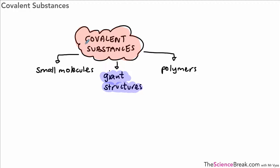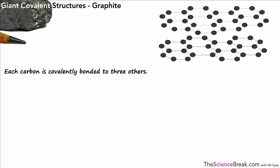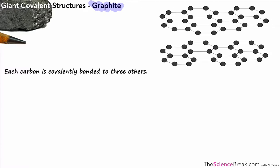Today we're looking at giant covalent structures. We're going to start with the first one: graphite. Graphite is a giant covalent structure, sometimes called a macromolecule. Here is an example of how the atoms are arranged in graphite — you can see two layers in a kind of 3D picture. All the atoms in graphite are carbon atoms, shown as black circles.